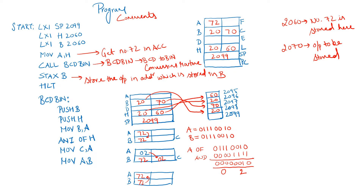Starting the program: the stack pointer is initialized at 2099H. The number 72 is stored at memory location 2060H, and the HL pair points to 2060H. Location 2070H is where we want to store our output, and that address is stored in the BC pair.